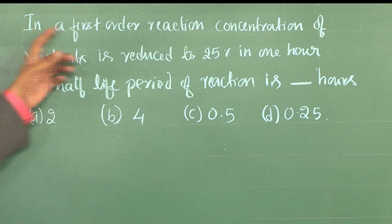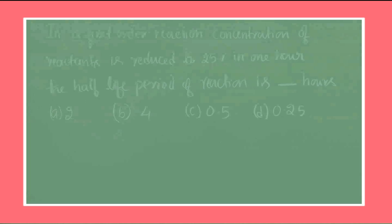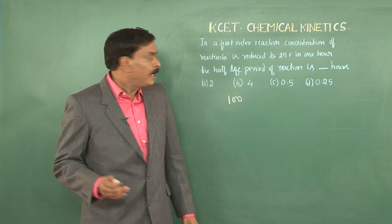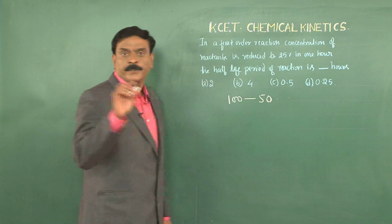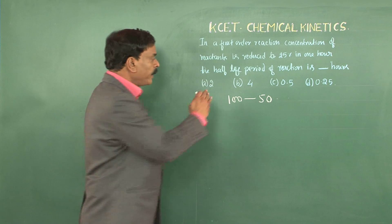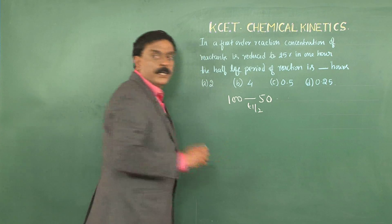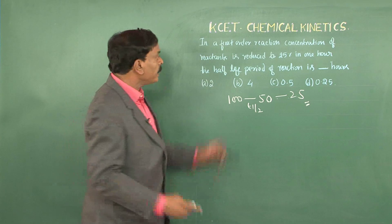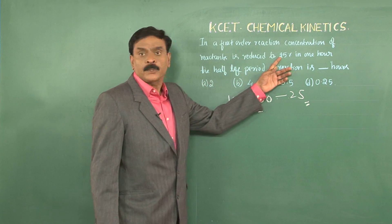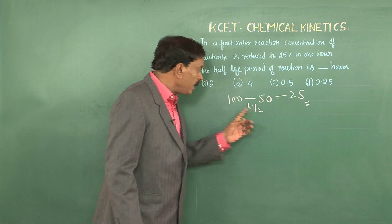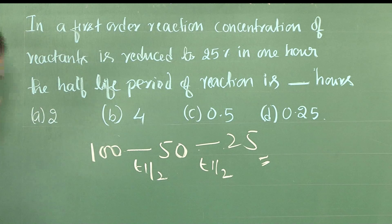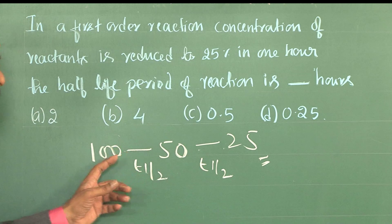Coming to this question: in a first-order reaction, the concentration of reactants is reduced to 25% in one hour. Let us say the initial concentration is 100. During the first half-life period, 100 becomes 50 — 50% has reacted. During the next half-life period, 50 reduces to 25. So from 100 to 25 takes 2 half-life periods, and these 2 half-life periods add up to 1 hour.